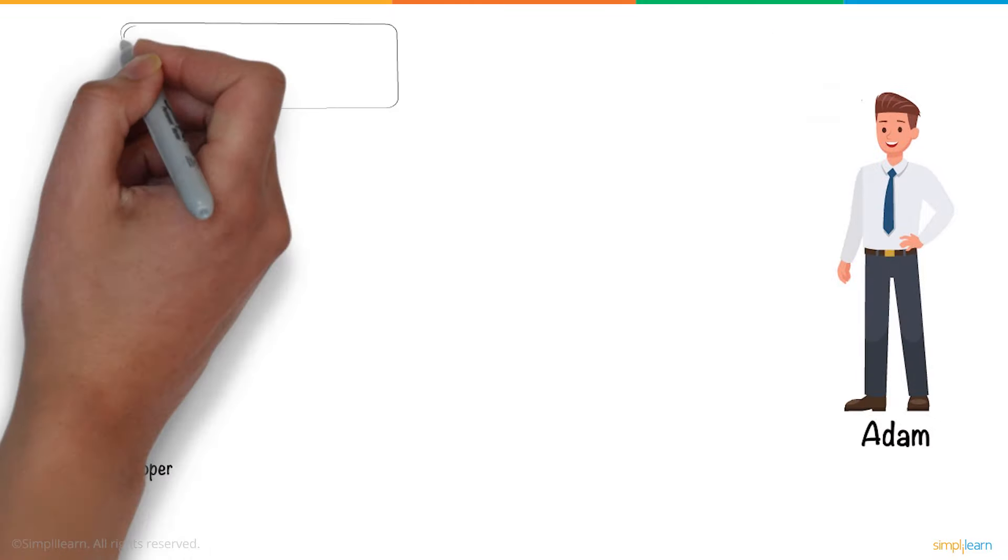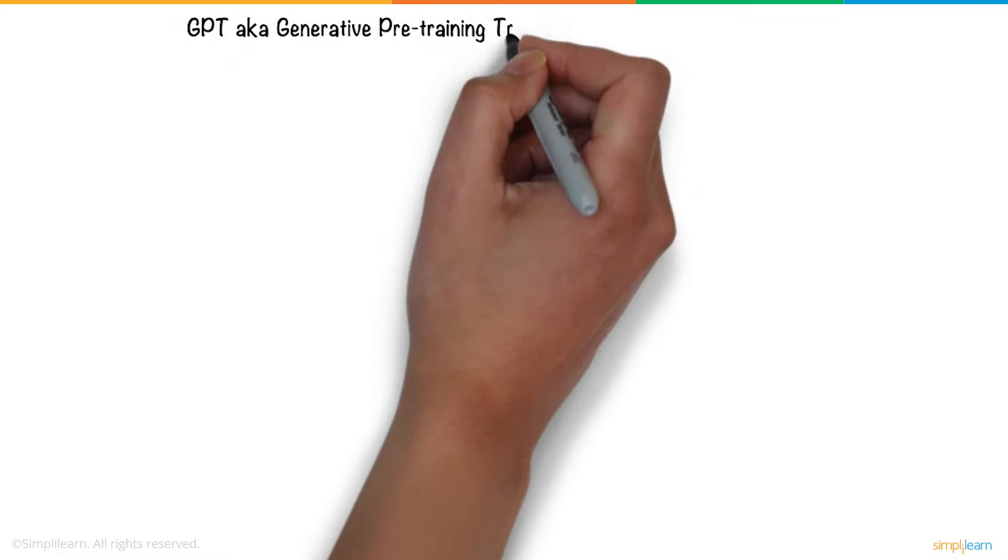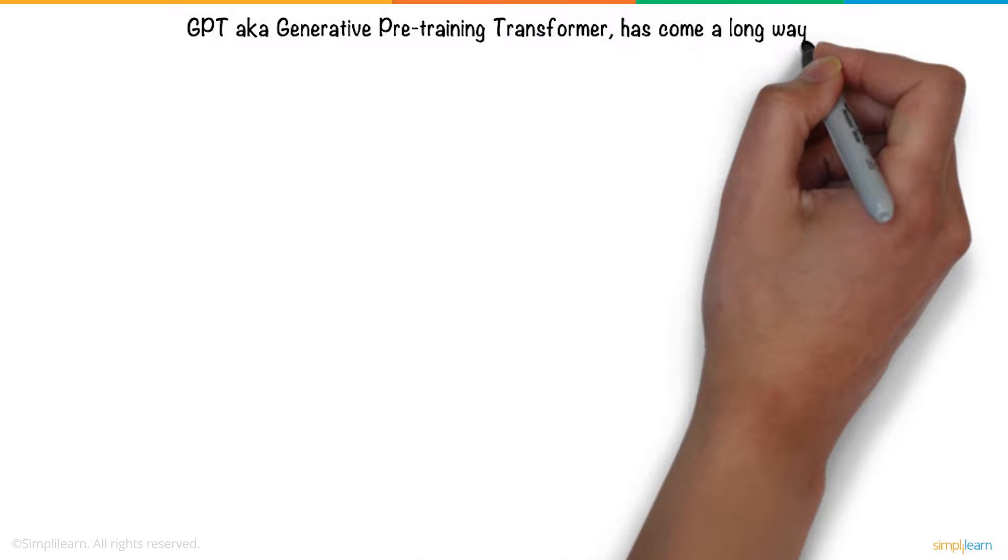Fascinated by hearing this, John asks Adam to explain in detail. After Adam explains that GPT, aka Generative Pre-Training Transformer, has come a long way.